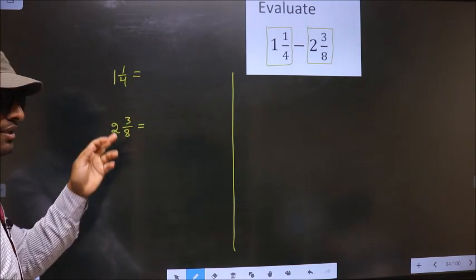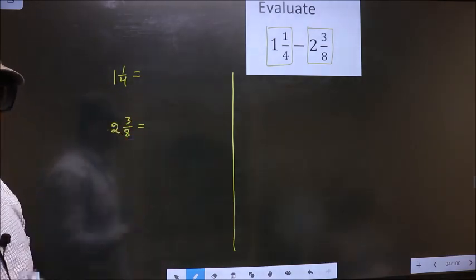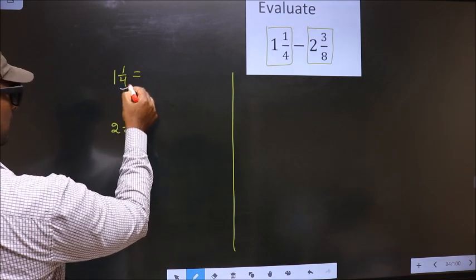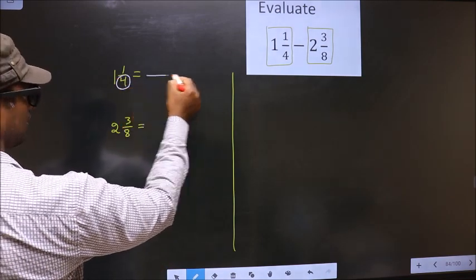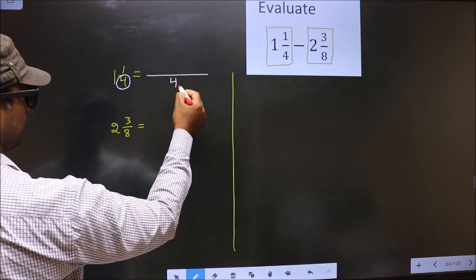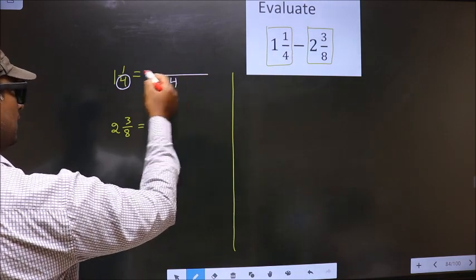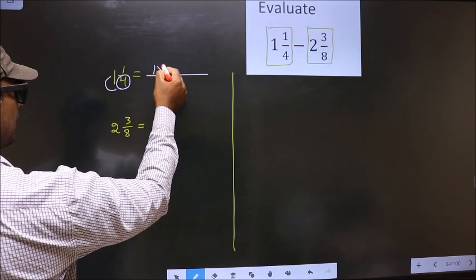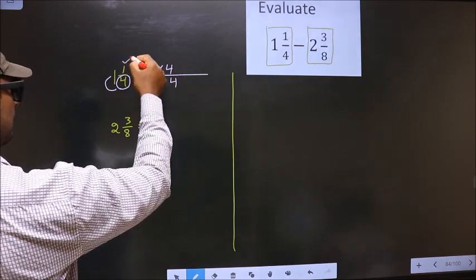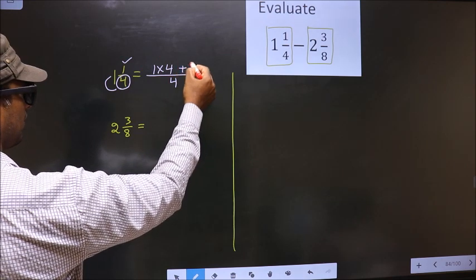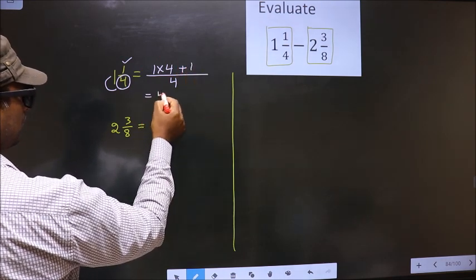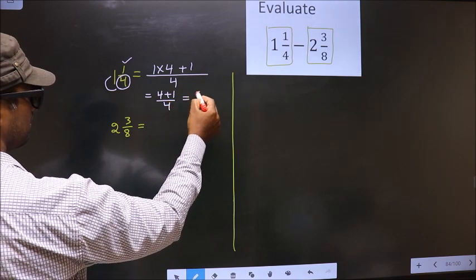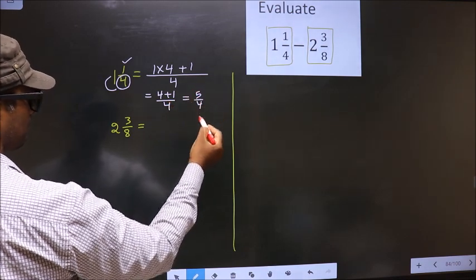How do we convert these to improper fractions? Here the denominator is 4, so you also write 4 in the denominator. In the numerator, we should multiply these two numbers, that is 1 into 4, and also add this number, that is plus 1. So, 1 into 4 is 4 plus 1 by 4, that is 5 by 4.